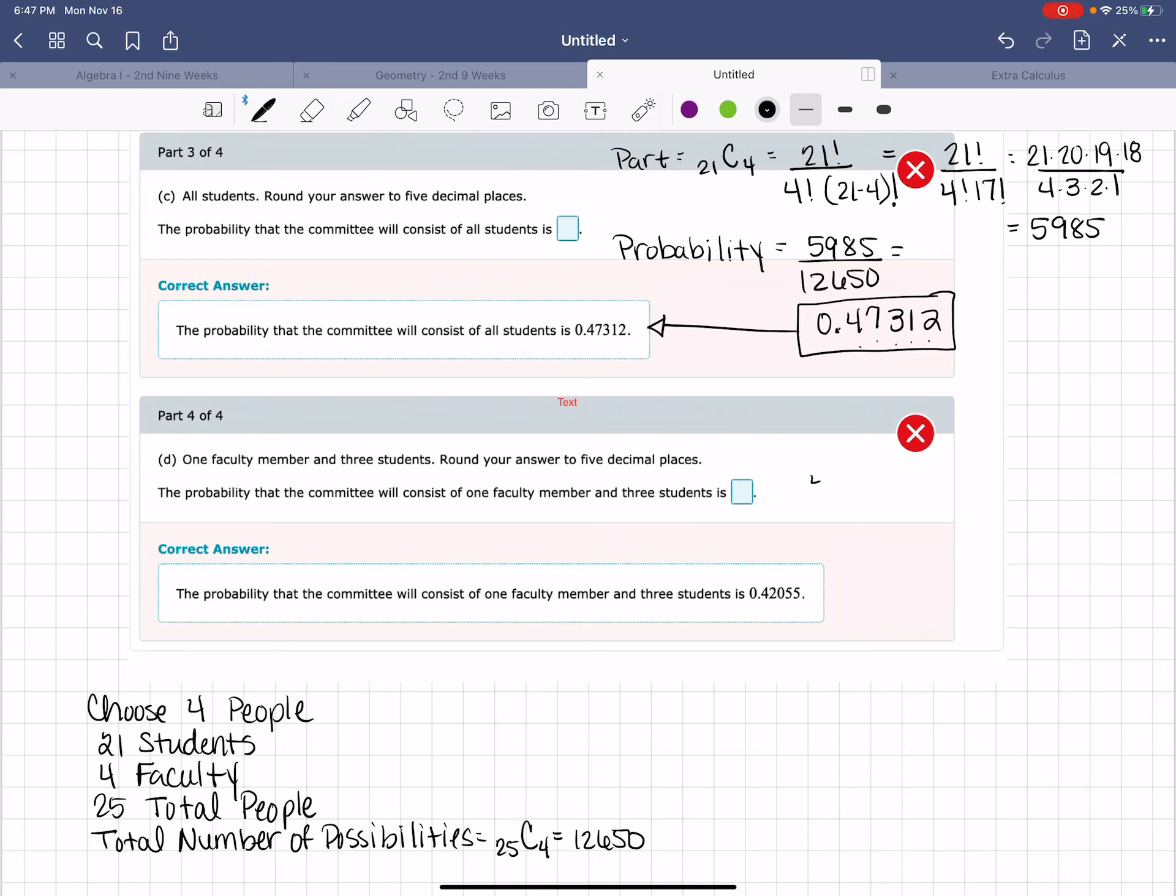So I have four faculty members. I'm going to choose one. So that gives me 4 factorial over 1 factorial times 4 minus 1 factorial. That gives me 4 factorial over 1 factorial times 3 factorial, which is 4 over 1, which is 4.